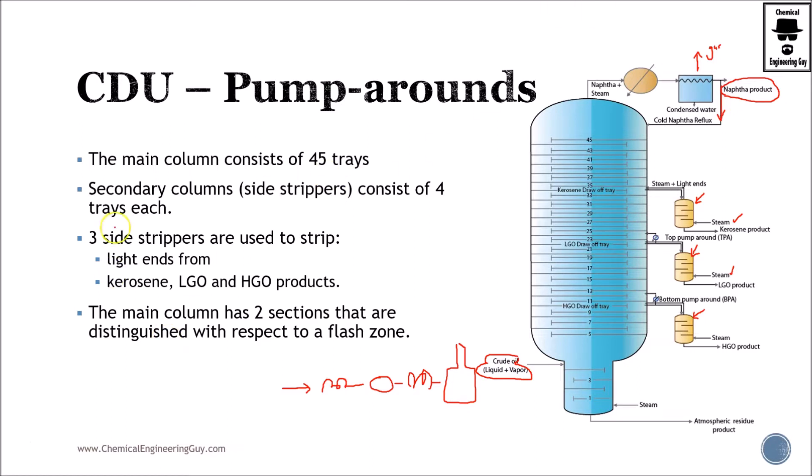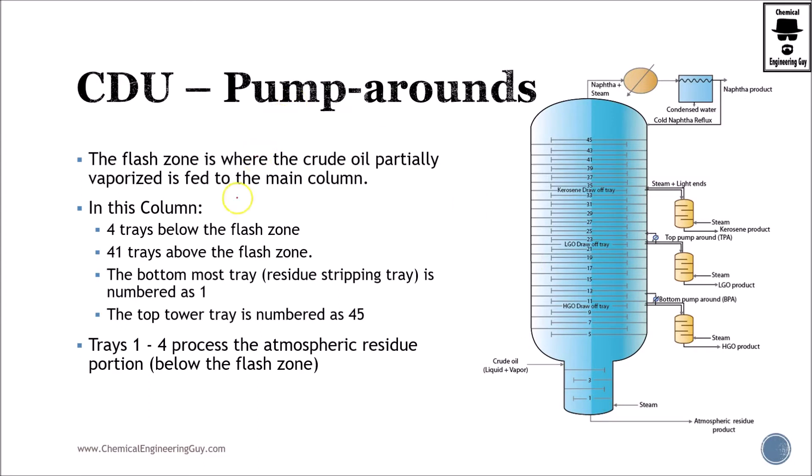Then we have three side strippers: side stripper number one, two, and three. So light ends are essentially kerosene, LGO, and HGO. The main column has two sections: this large section up to here from plate 35 up to 45, and the flashing section, which is one to four. The flash section is essentially four trays. The bottoms is mostly residue.